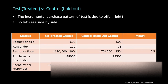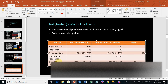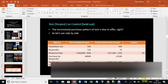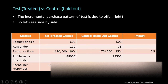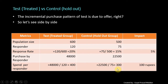There is another angle as well: what is the total purchase made by these 120 folks? Say it is 48,000, and the 75 people in the control group made purchases of 22,500. So spend per responder comes out to 400 for the test group and 300 for the control group. So not only did 5% more people start spending, but in fact all 20% of the responding people spent 100 rupees more than those in the control group — that's another dimension of the campaign's impact.